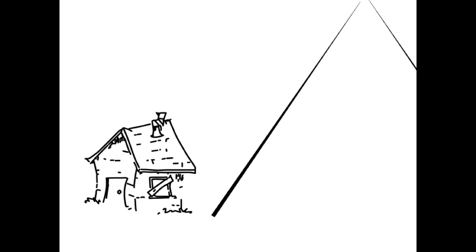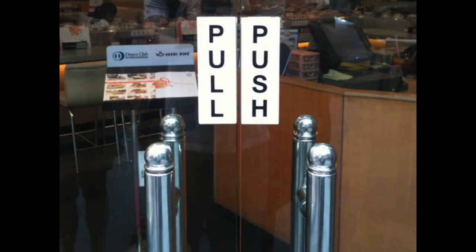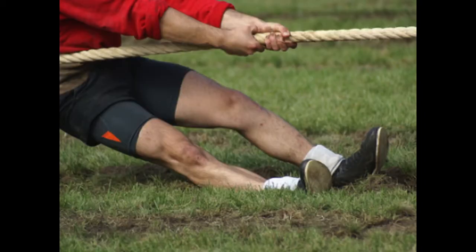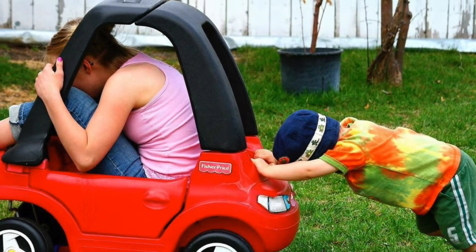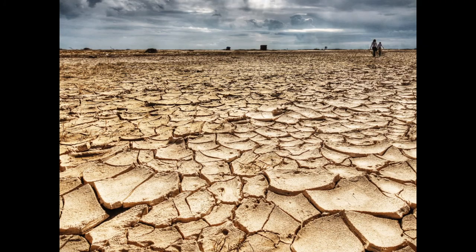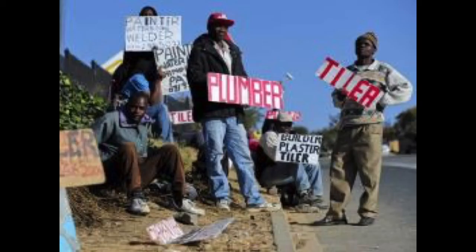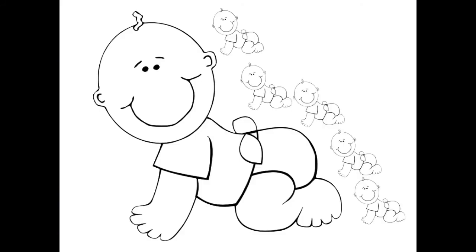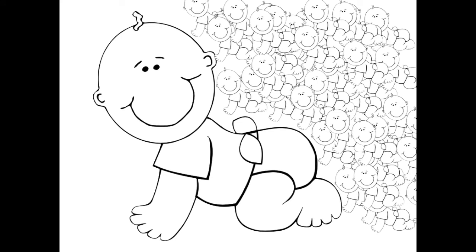Rural to urban migration is one of the main causes of urbanisation in LEDCs. There are a number of push and pull factors responsible for this migration. Pull factors attract people to urban environments because of the chance of better jobs, education and healthcare. Push factors force people away from rural environments, such as drought, civil war and a lack of employment opportunities. The final reason for rapid increase in urbanisation in LEDCs is natural increase, caused by a decrease in death rates while birth rates remain high.